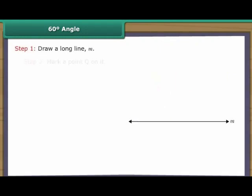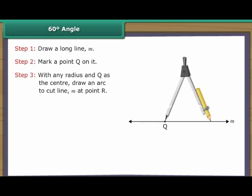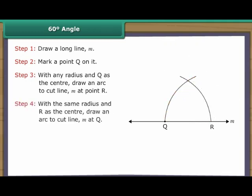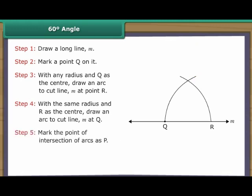Construction of 60 degree angle. Draw a long line M. Mark a point Q on it. With any radius and Q as the centre, draw an arc to cut line M at point R. With the same radius and R as the centre, draw an arc to cut the first arc. Mark the point of intersection of arcs as P. Join P to Q. Angle PQR is formed, which is a 60 degree angle.